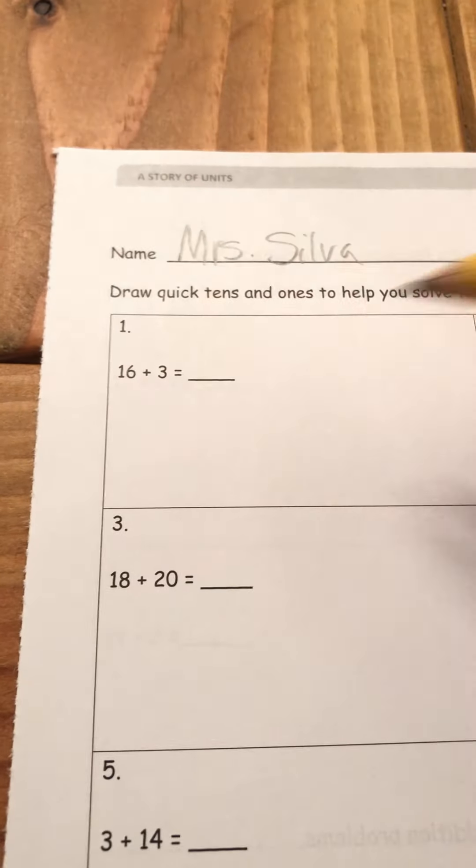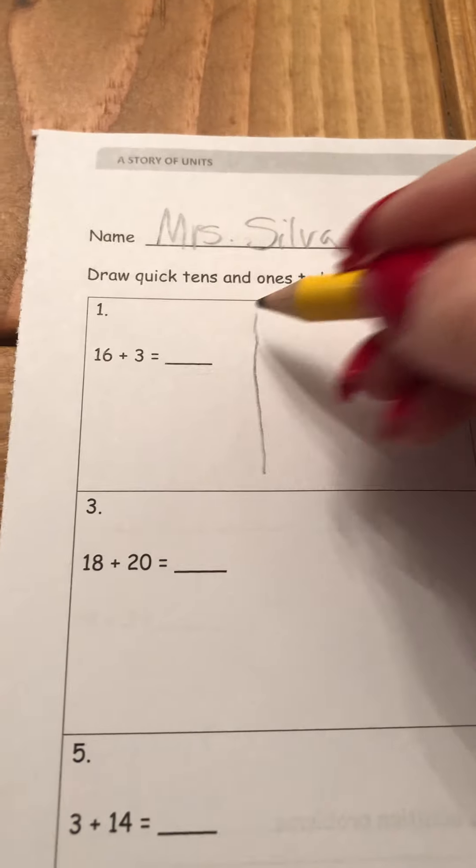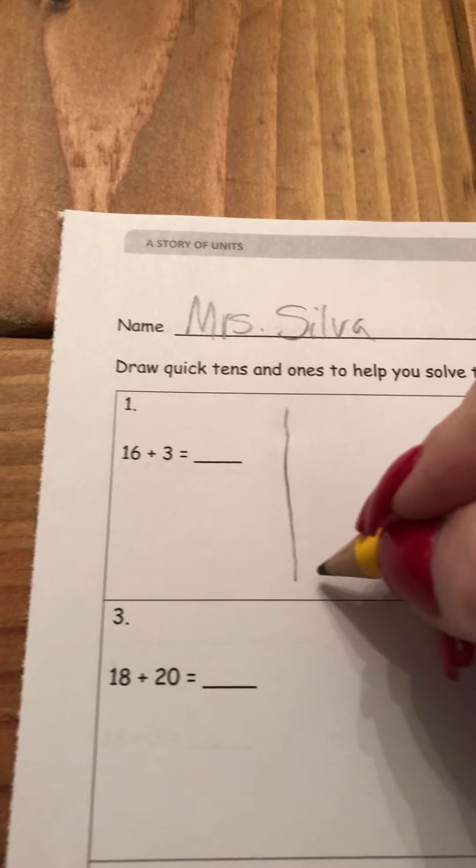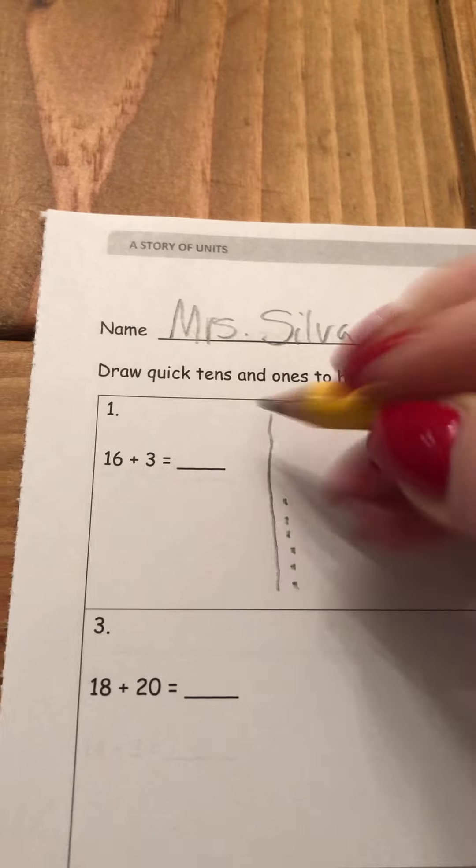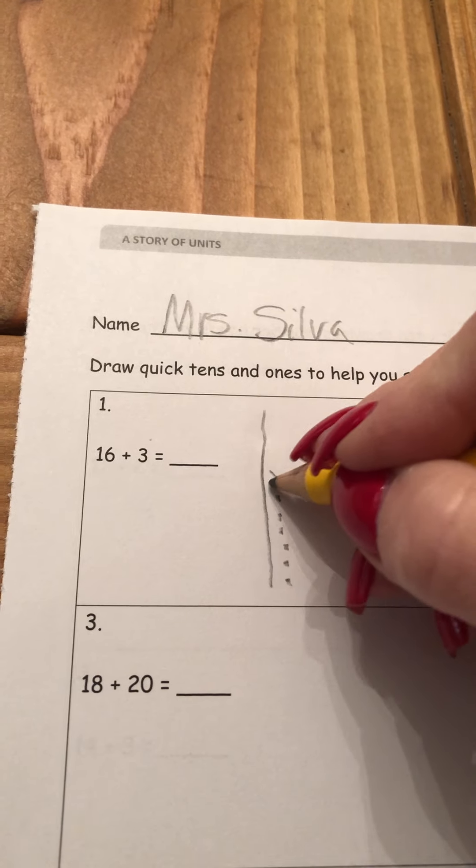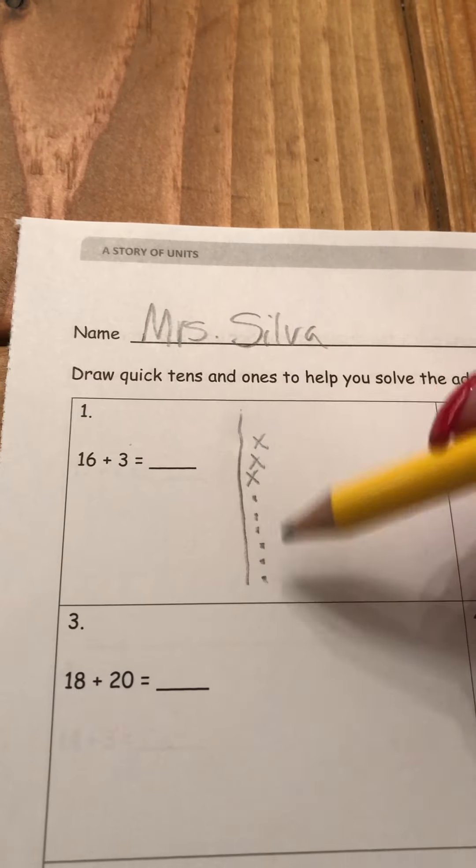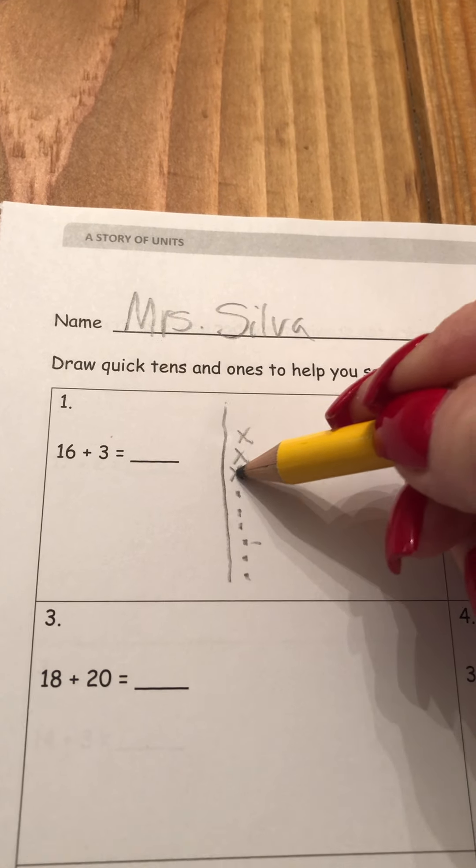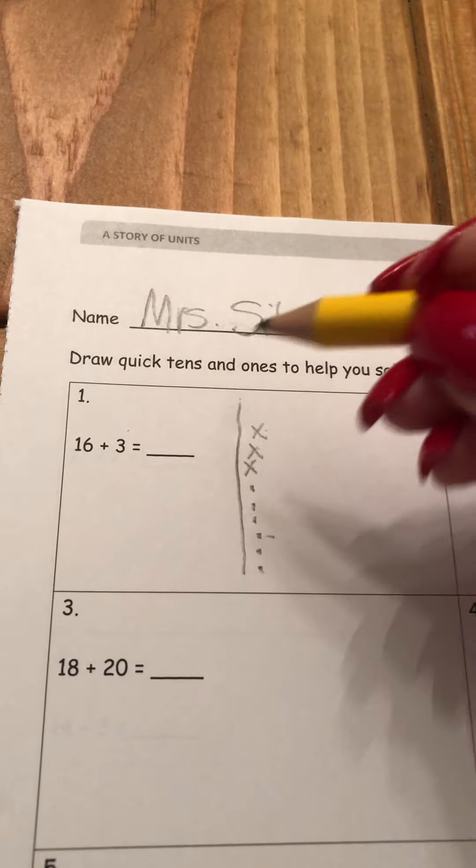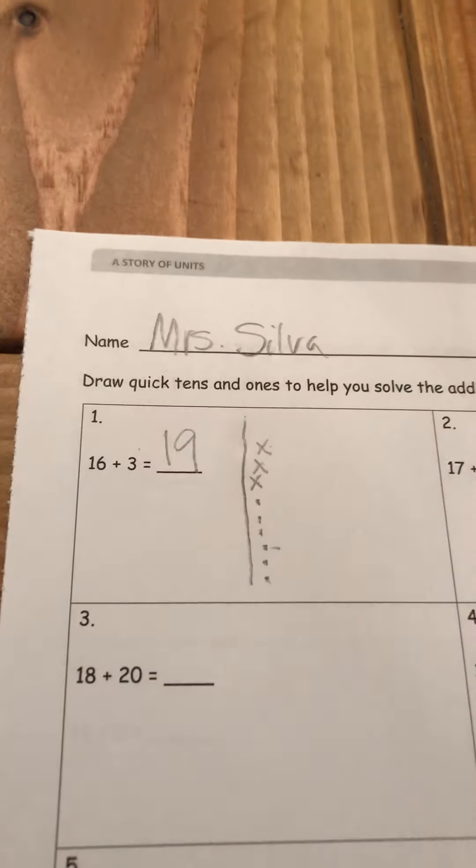It says 16 plus 3, so my first quick ten, and six little dots. One, two, three, four, five, six, and three X's. One, two, three. We know that the quick ten and the six ones is 16. Count on 17, 18, 19, and that's all you have to do.